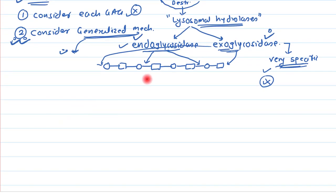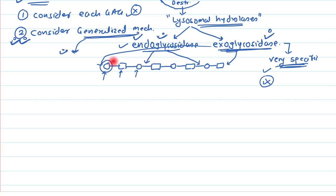Endoglycosidases break internal bonds of the polymer, while exoglycosidases are specific to the terminal sugar. Once one terminal sugar is removed, the next sugar is exposed and can then be removed by its specific enzyme. So for each sugar there will be a different exoglycosidase.